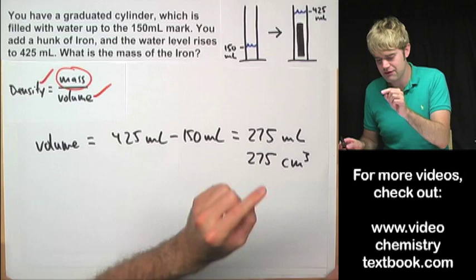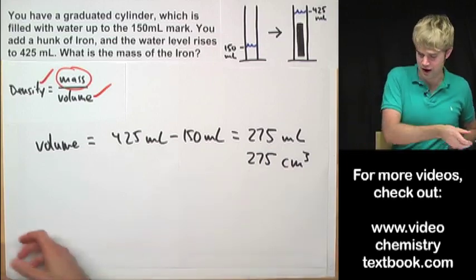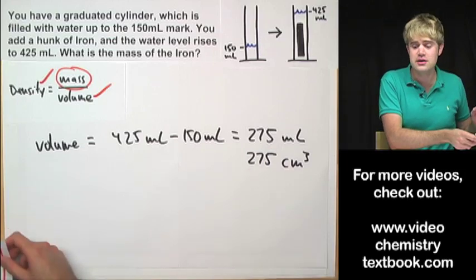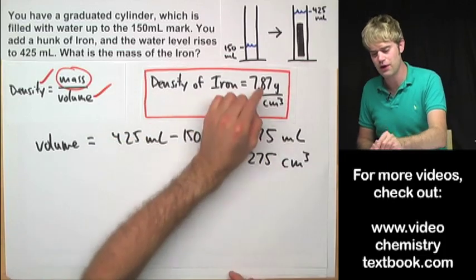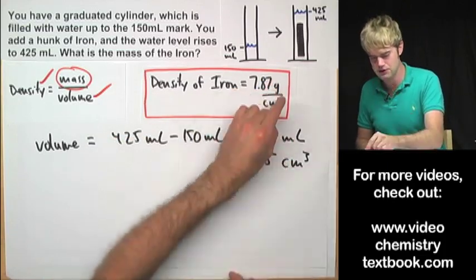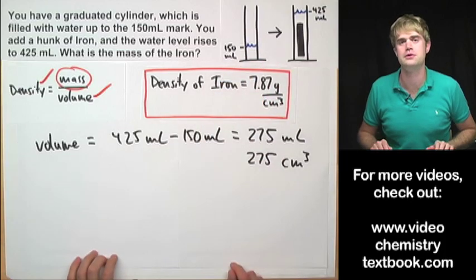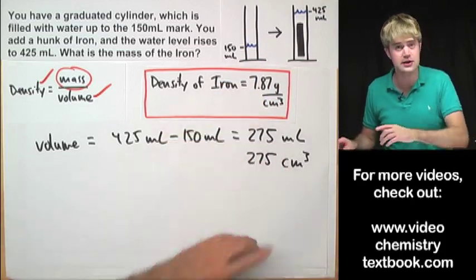So now I have the volume for the iron, 275 cubic centimeters and now I need the density. I can just look this up online really easily and I find out that it's 7.87 grams per cubic centimeter. So now I'm ready to go, I've got the two things that I need.